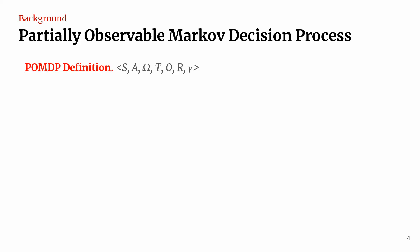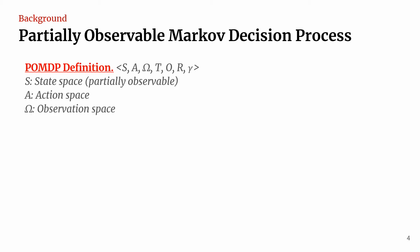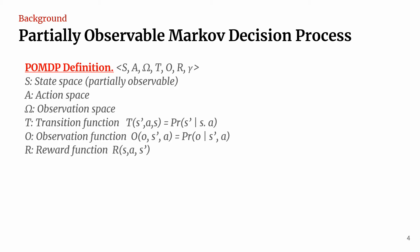A POMDP is formally defined as a tuple, where S is the state space, A is the action space, Omega is the observation space, T, O, and R are the transition, observation, and reward functions, and Gamma is the discount factor. Due to partial observability, the agent maintains a belief state, which is a distribution over states given history — a sequence of past actions and observations.